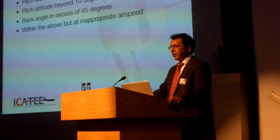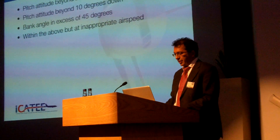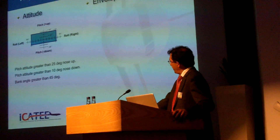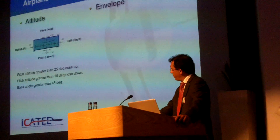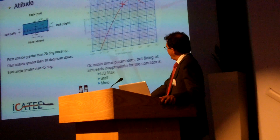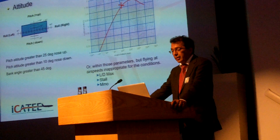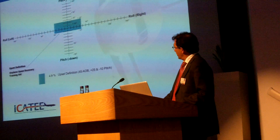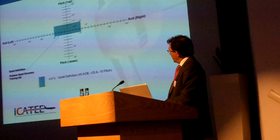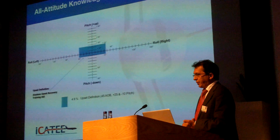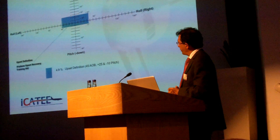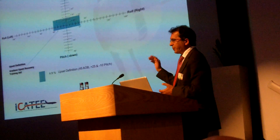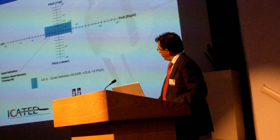What is an upset? The airplane upset recovery training defines upsets by these conditions: a pitch attitude greater than 25 degrees nose up, or 10 degrees nose down, or a bank angle greater than 45 degrees, with the envelope defined by the lift-over-drag curve where parameters are exceeded by flying at airspeeds inappropriate for those conditions. We are trained to fly and operate within the blue envelope, which represents only 4.9% of the complete flight space we could end up in.